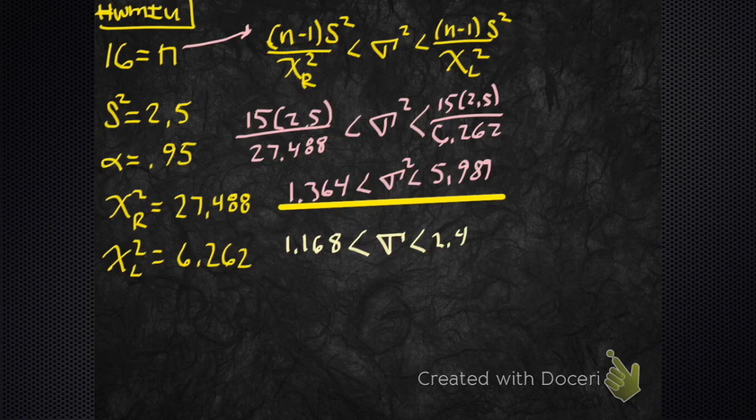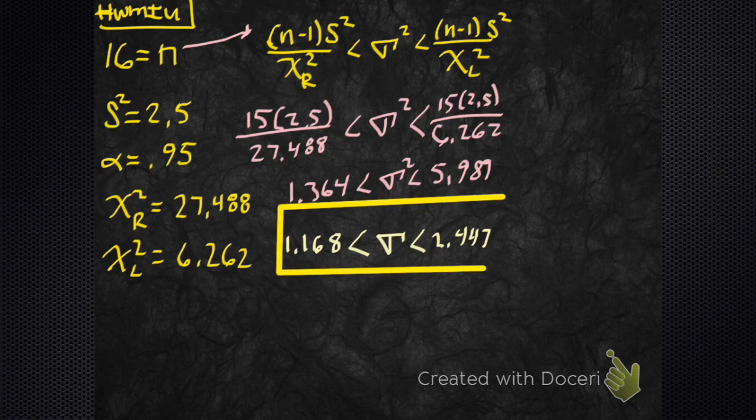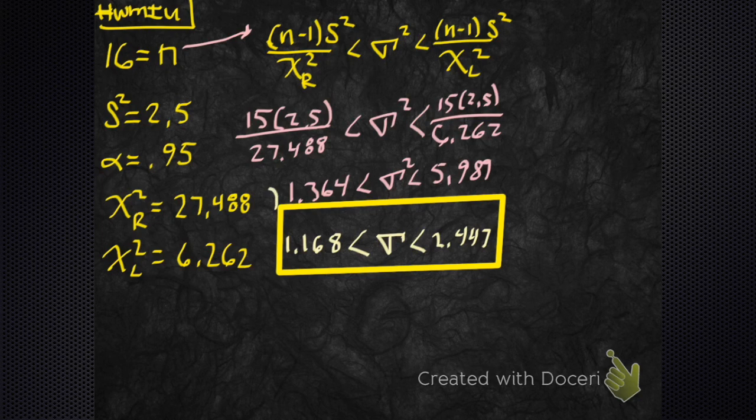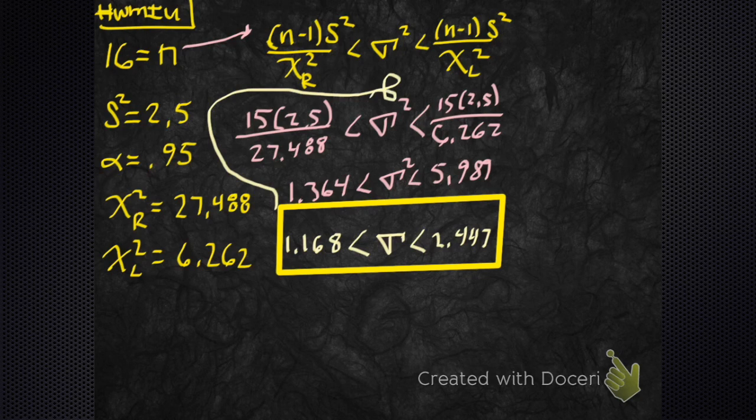And then on the right, 2.447. Boom. And then we took it a step further and we made a confidence interval for the standard deviation also. Box and wildflower.